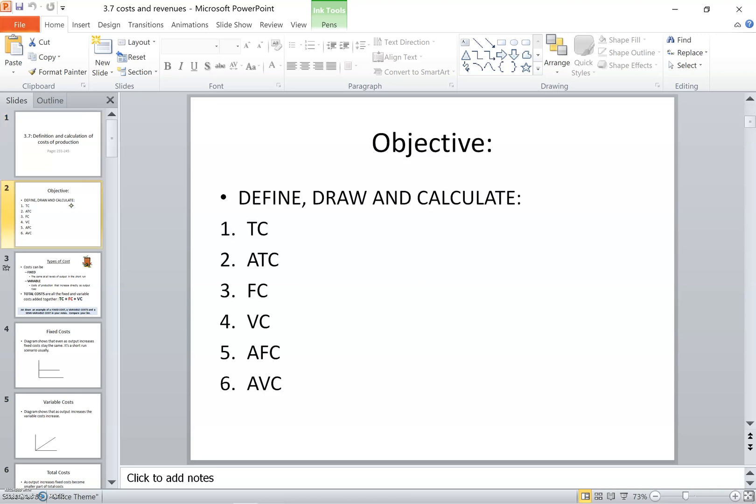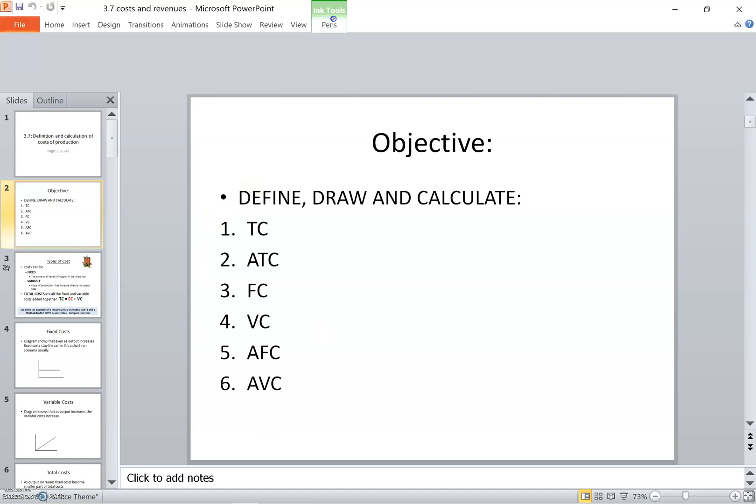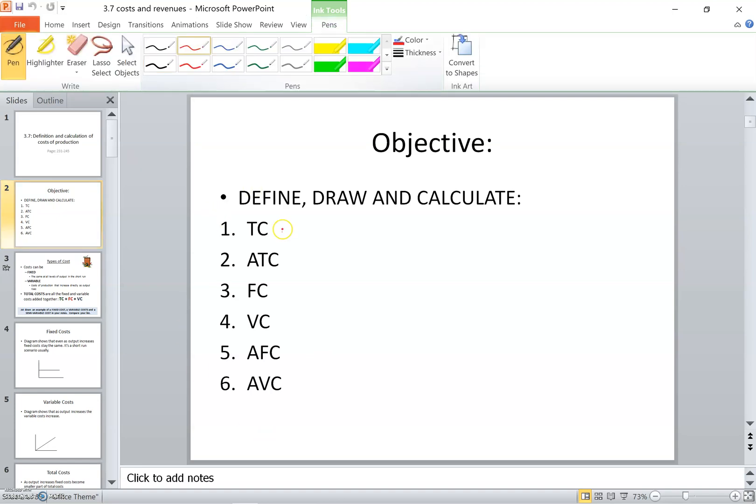Our objective for today would be defining and drawing and calculating all of the following: total cost, average total cost, fixed cost, variable cost, average fixed cost, and average variable cost.